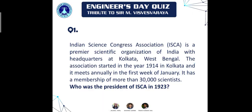Here we go! Question number one: we are talking about a person who was the president of ISCA — the Indian Science Congress Association — in 1923. ISCA is a premier scientific organization of India with its headquarters at Kolkata. We are looking for the president of ISCA in 1923. Since it's an Engineers Day quiz and a tribute, here's the answer.